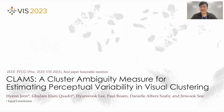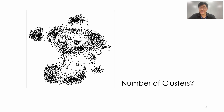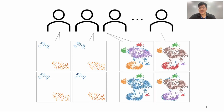Before we start, I would like to ask one question. How many clusters are in this scatterplot? You may say that there are two clusters. Now, see this scatterplot. How many clusters are there? This time, you may be confused. Maybe there are four clusters, or five, or six. We actually conducted a study on this. We asked participants to perform visual clustering on the scatterplots and found that the answers varied a lot in the second scatterplot compared to the first one.